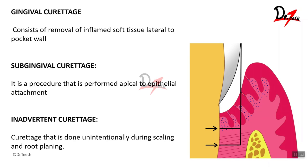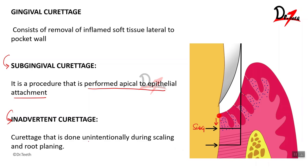Gingival curettage consists of the removal of the inflamed soft tissue lateral to the periodontal pocket. Based on how far you remove the tissue, we have sub-gingival curettage and inadvertent curettage. Sub-gingival curettage is performed apical to the epithelial attachment. Inadvertent curettage is done unintentionally during scaling and root planing, where you go far apical to the epithelial attachment and remove a lot of soft tissue unintentionally. Always make sure you do not end up performing inadvertent curettage.